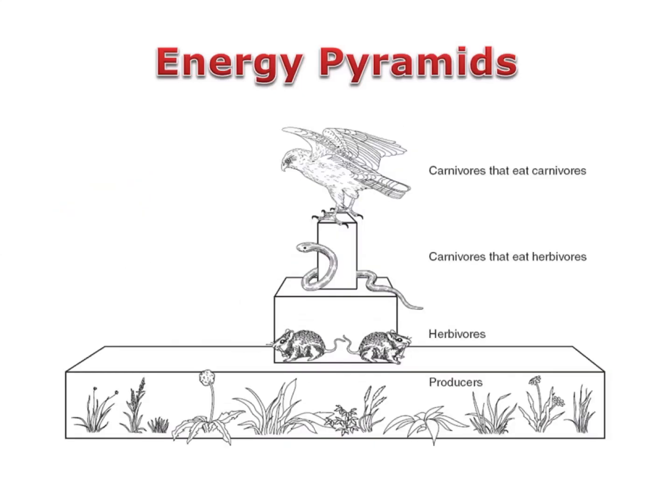You may also see energy pyramids that look less like a triangle and more like a bar diagram. This is actually a more accurate representation of the amount of energy found at each trophic level. Unlike a triangle, which shows a gradual drop off in energy between trophic levels, a diagram like this shows how drastic the drop off is. Remember, only 10% of the energy from one trophic level goes to the next, meaning each trophic level should be much, much smaller than the previous level, just like this diagram depicts.